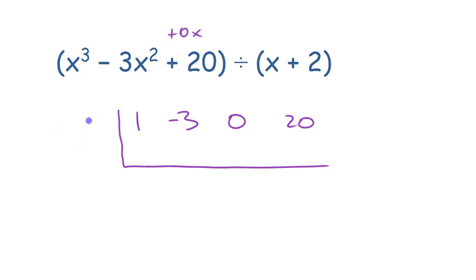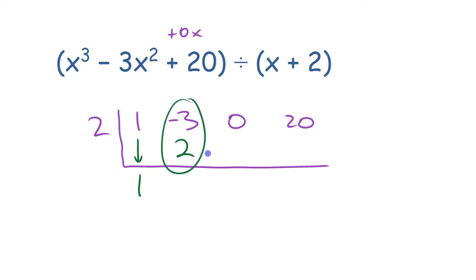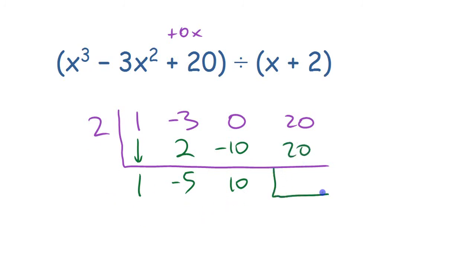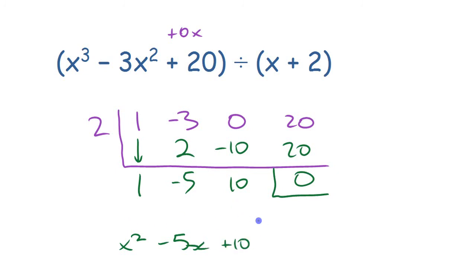Carry the first number down, multiply it back, write it here. Subtract: negative 3 take away 2 is minus 5. Multiply back, write it down. Subtract: 0 take away negative 10 is 10. Multiply back, write it down, subtract — and you get a remainder of zero. The quotient is x squared minus 5x plus 10 and the remainder is zero.